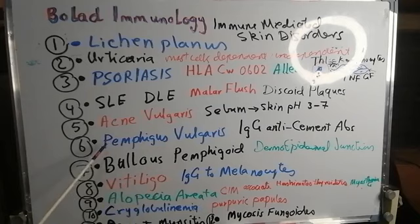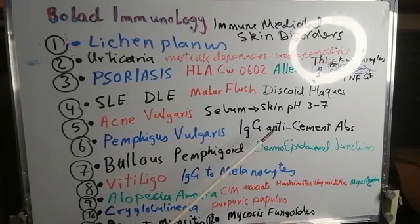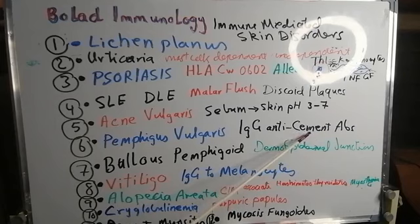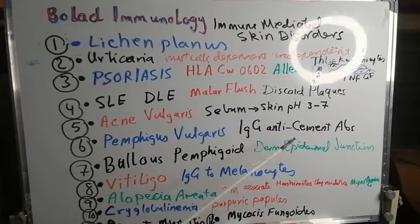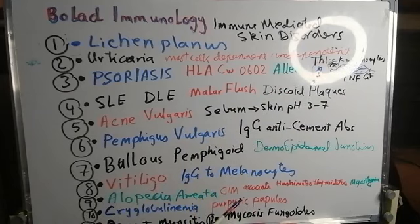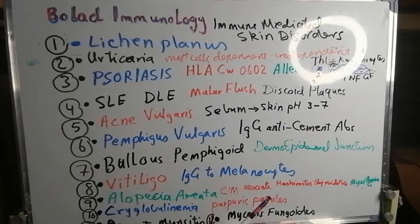Another immune-mediated skin disorder is pemphigus vulgaris. Some individuals may mount IgG anti-cement antibodies. As the cement attaches or connects keratinocytes together, the appearance of these antibodies together with specific antigens leads to immune complexes, which in turn lead to abrasions or very superficial ulcers.